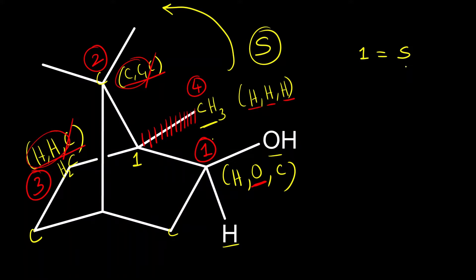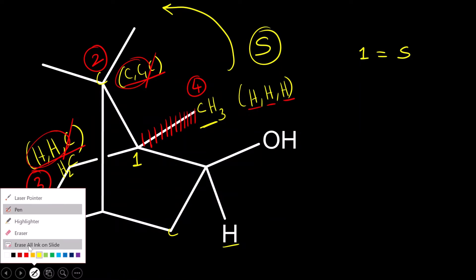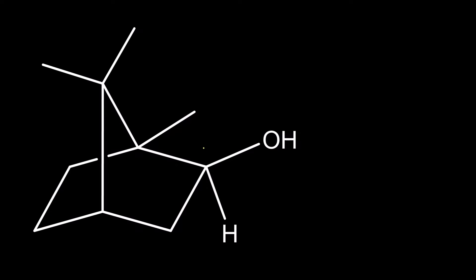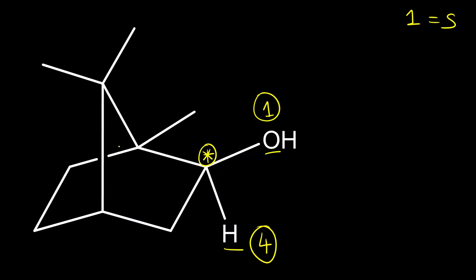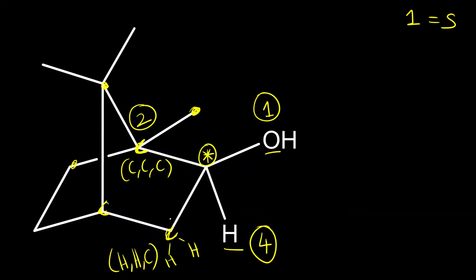Now let us see the second chiral carbon. Carbon one is S; now we calculate carbon two. Again assign priority — hydrogen has the least priority so it gets four. Oxygen has the highest atomic number so it gets one. Comparing the two remaining carbons: this one is attached to two hydrogens and one carbon, while this carbon is attached to three carbons, so this gets second priority and the other gets third. Hydrogen is below the plane — fourth priority group is below the plane — and one, two, three is anti-clockwise, so carbon two is also S.